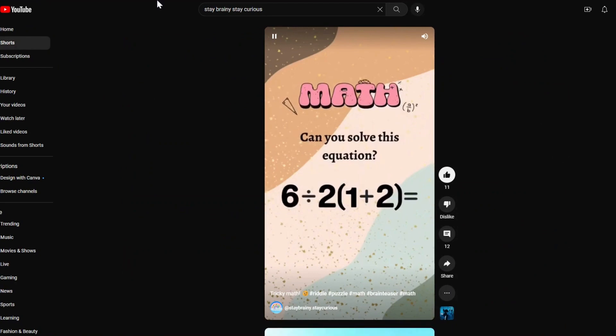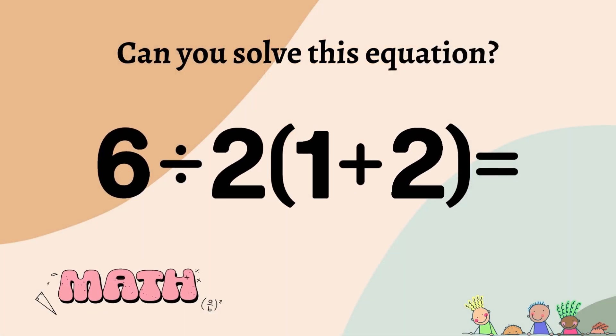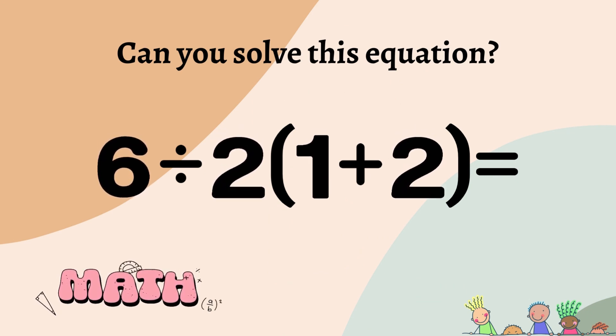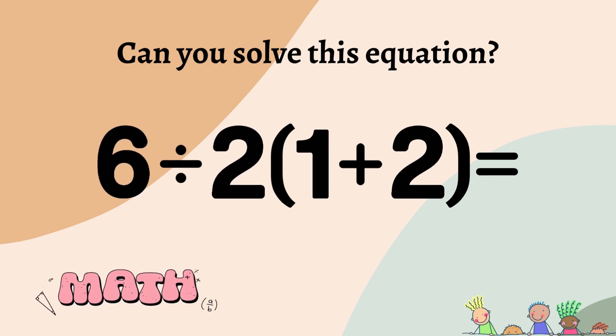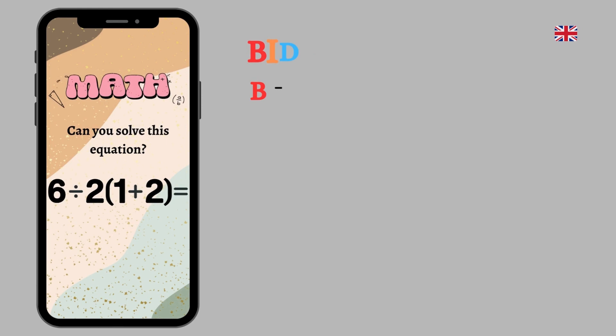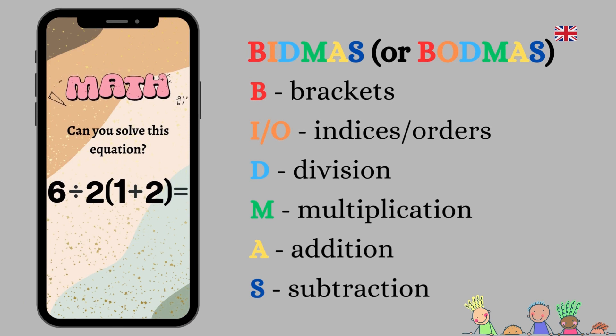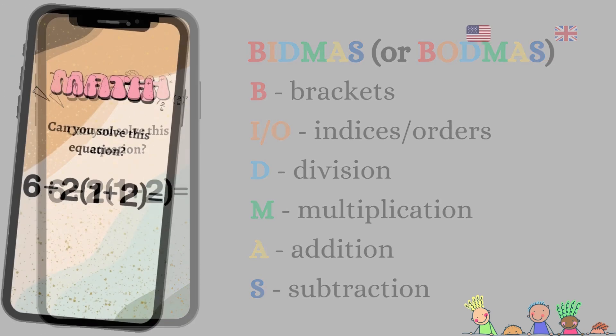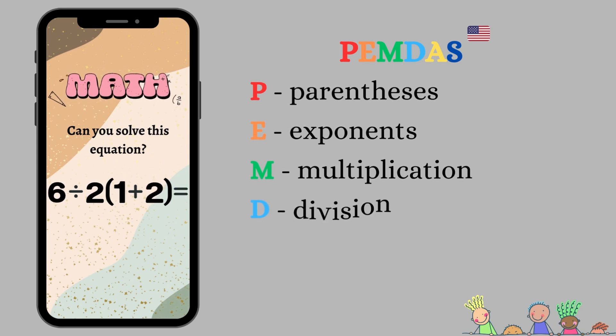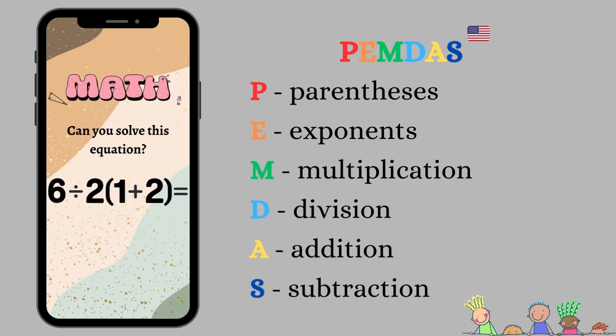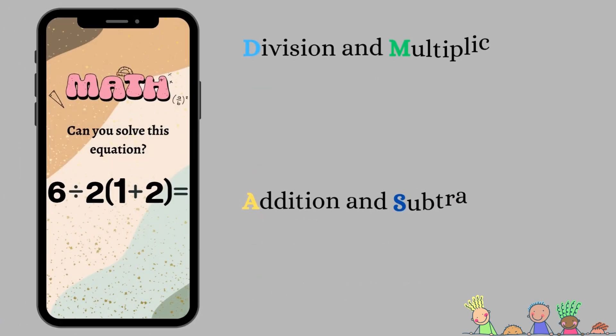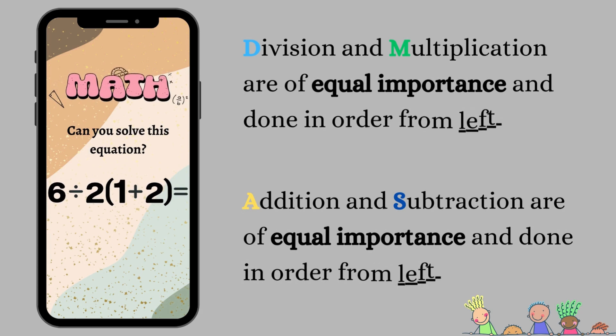Our fifth and final riddle is a math equation that tripped up many people. 6 divided by 2, open parentheses, 1 plus 2, close parentheses. What do we even do first? If you're new, you might need this refresher on orders of operations. BIDMAS tells us to solve brackets first, followed by indices, then division or multiplication, and finally addition or subtraction. If you're from the states, it's exactly the same rules. We just call brackets, parentheses, and indices, exponents. And once you're left with the same operations, always remember to solve your equation from left to right.